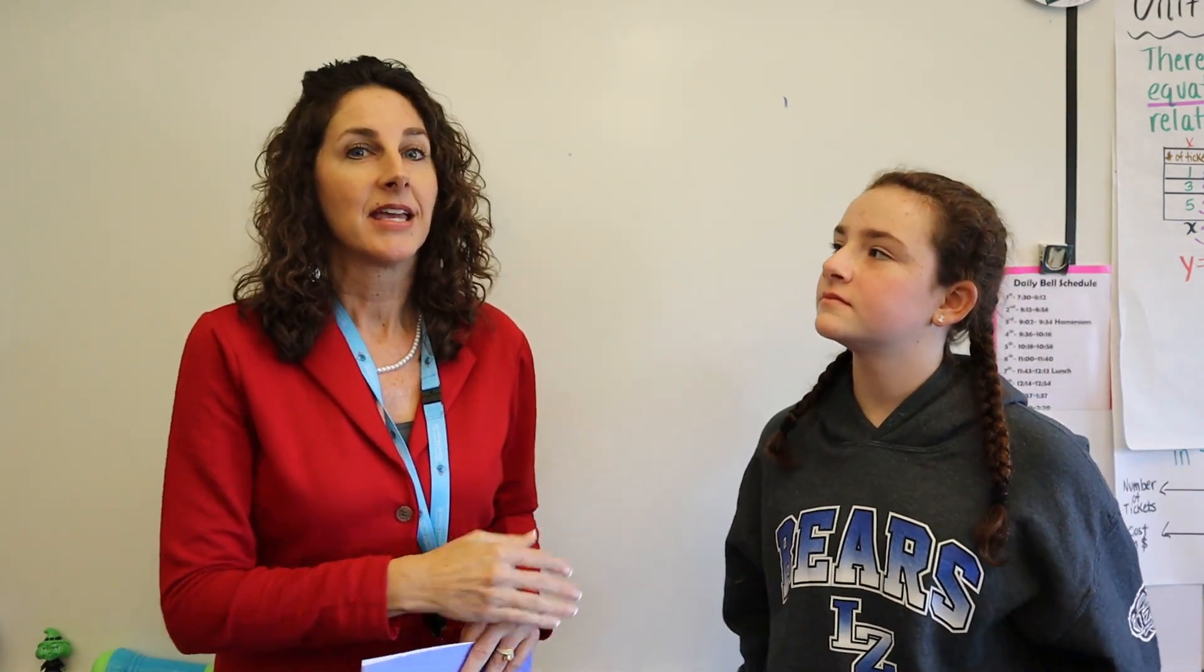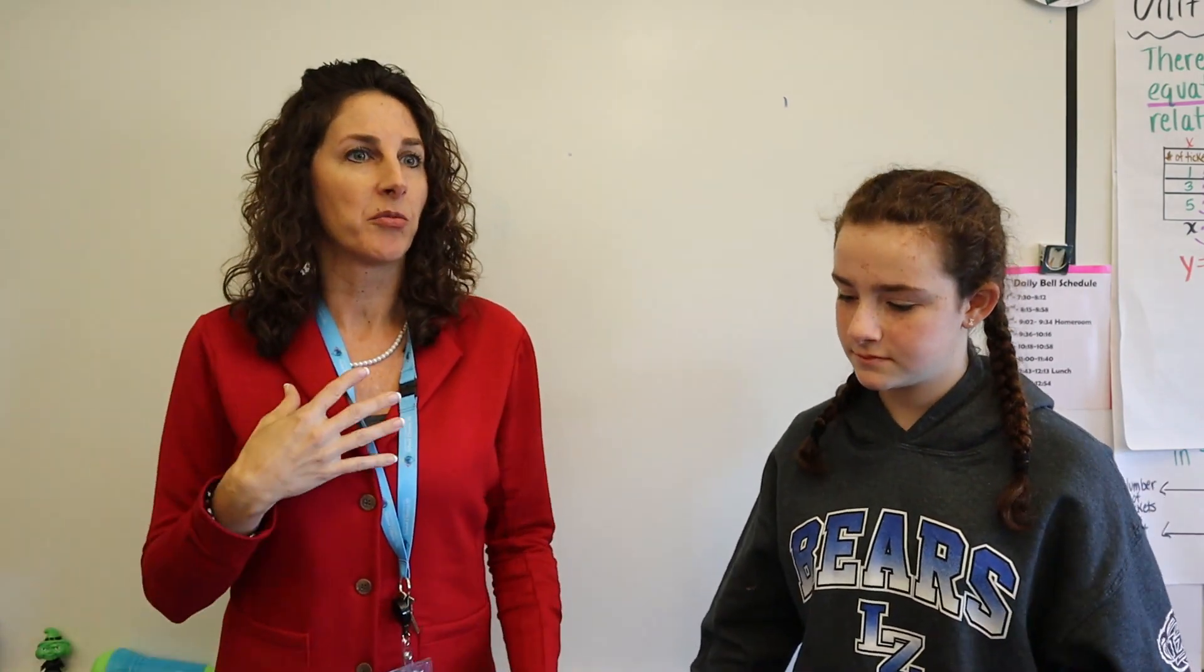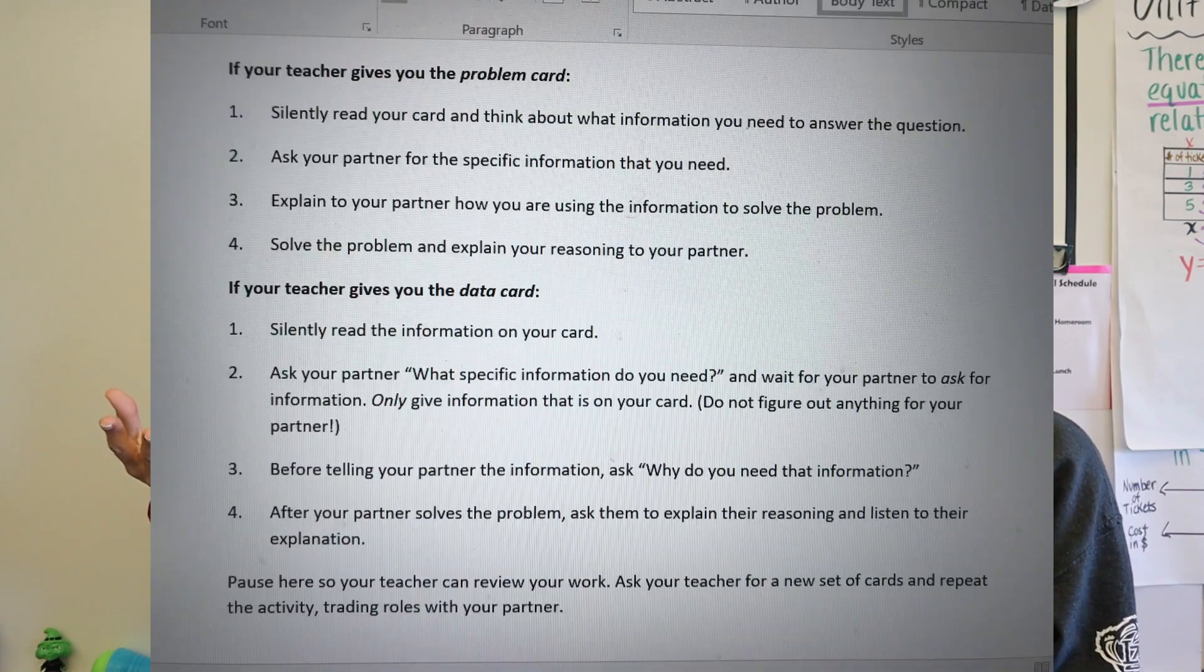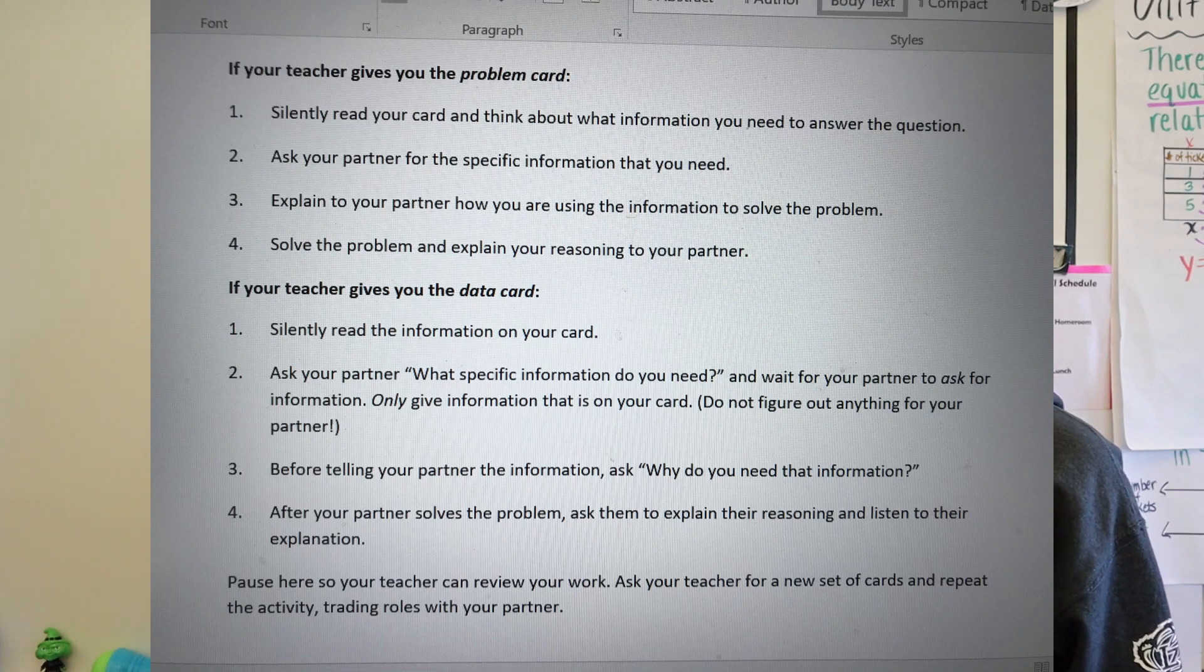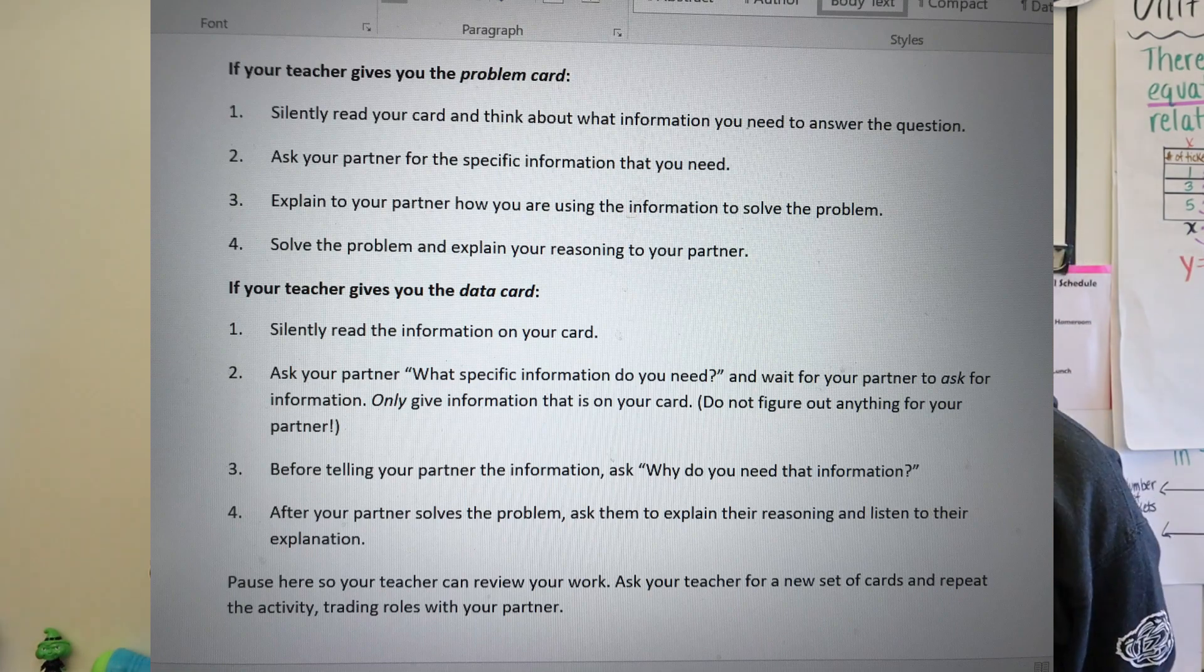One of us has the problem card, and one of us has the data card. When you have the problem card, you silently read your card and think about what information you would need to answer the question. You then ask your partner for specific information on their data card. You don't know what's on their card, but you're going to ask information to see if they have that information. You explain how you solve the problem.